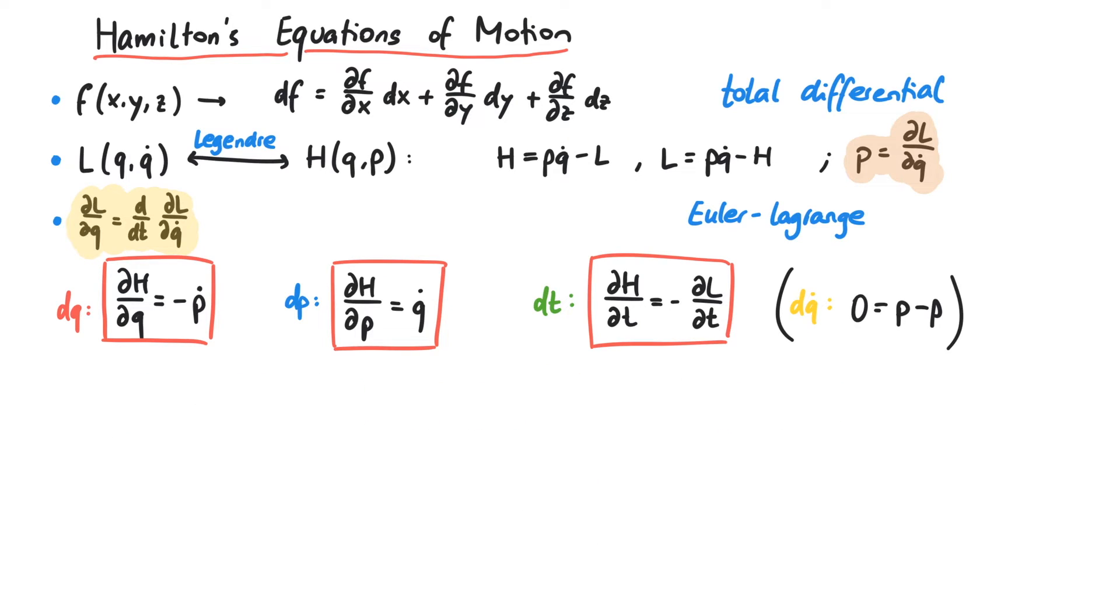Let's look at an example. The Hamiltonian for a free particle is given by p-squared over 2m. As you can see, this is equivalent to saying that it has kinetic energy p-squared over 2m and that there is no potential acting on the particle.